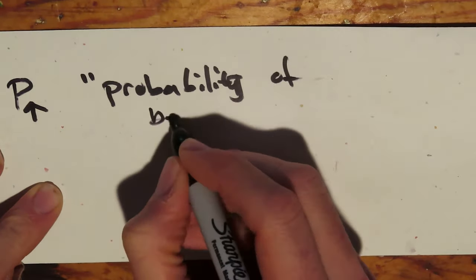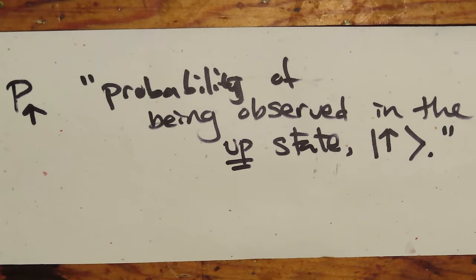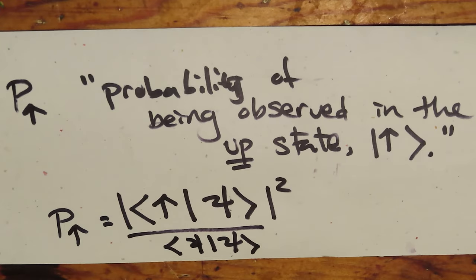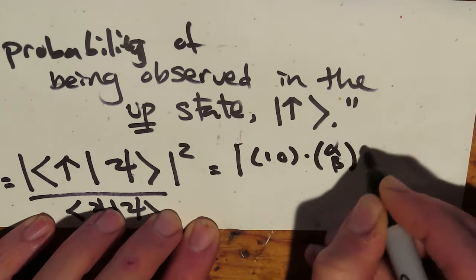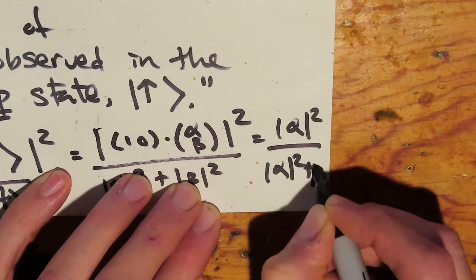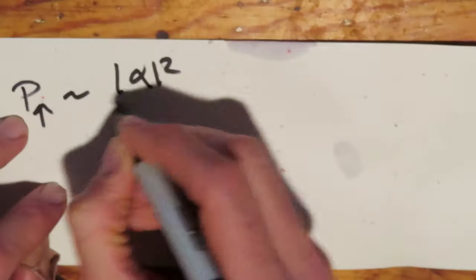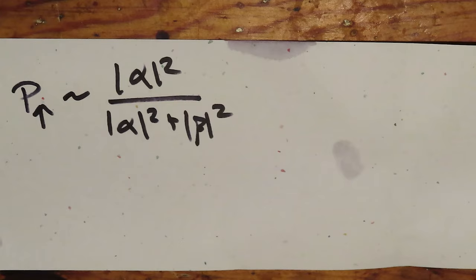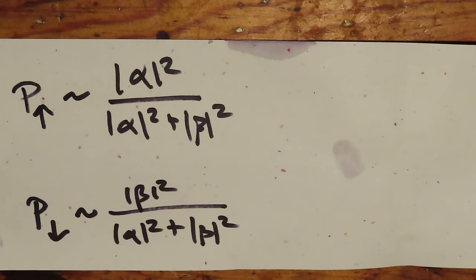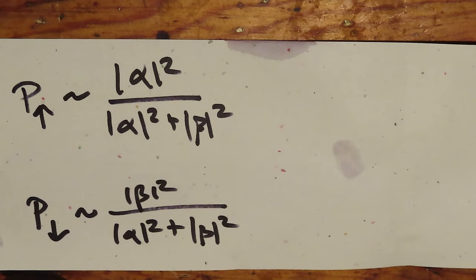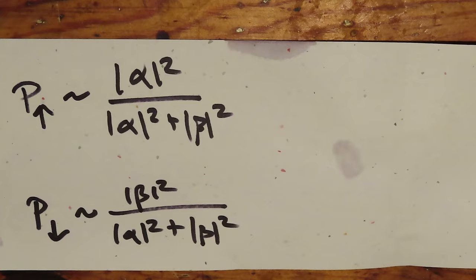To see how we can turn ψ into a probability distribution — or a probability mass function — let's look at the mathematics. The probability of observing a two-level system, a silver atom, in the up state is given by |⟨up|ψ⟩|² divided by the magnitude of that state. In terms of the components, that's equal to |α|² divided by |α|² + |β|². The probability of observing the atom in the down state is |β|² divided by |α|² + |β|². Right away you can see that there are only two possible outcomes, and the sum of those two probabilities is equal to one — 100% of the possible outcomes.